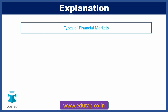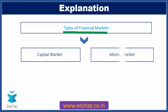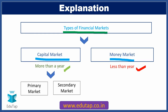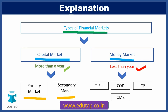Broadly, when we look at different types of financial markets, we have two broad categories: capital market and money market. Capital market instruments have a tenure of more than one year, while money market instruments usually have a time span of less than one year. Capital market can be further bifurcated into primary market and secondary market, with examples including equities, stocks, and bonds. Money market instruments include treasury bills, certificates of deposit, commercial papers, and cash management bills. This question pertains to commercial paper.